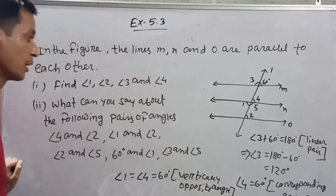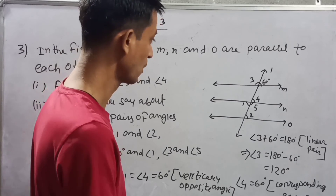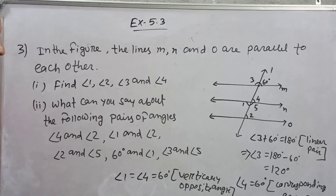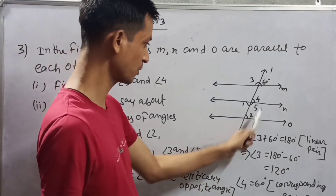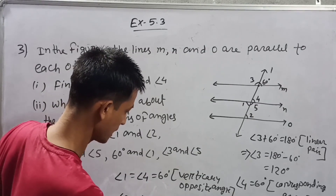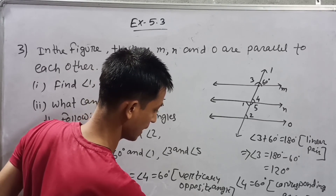Now angle 2 is equal to angle 4 by corresponding angles — or angle 2 equals angle 1 by alternate interior angles. So angle 2 is also equal to 60 degrees.